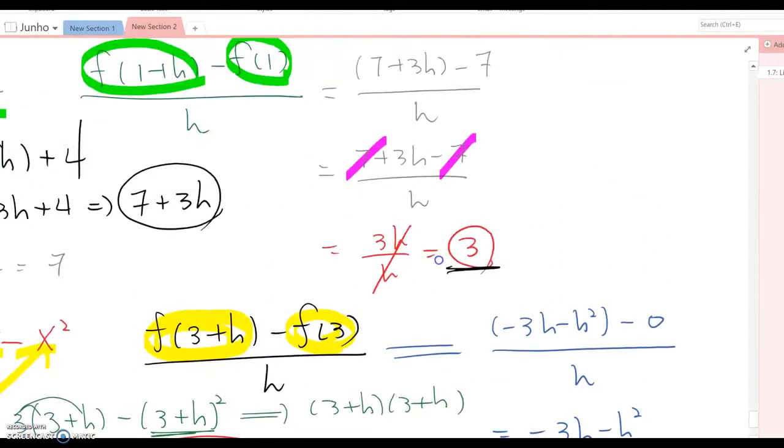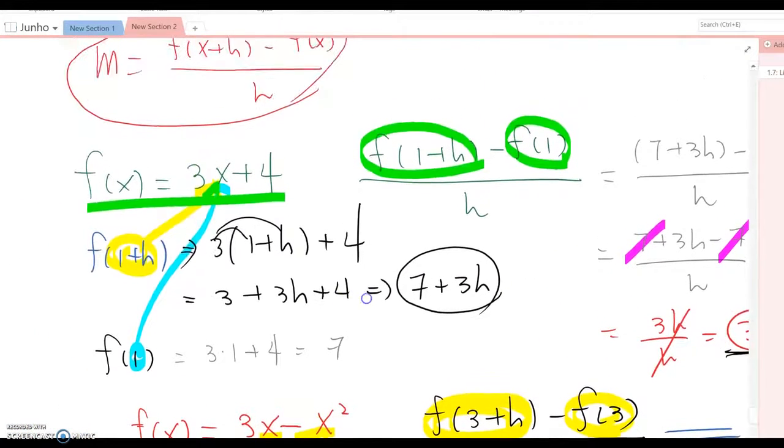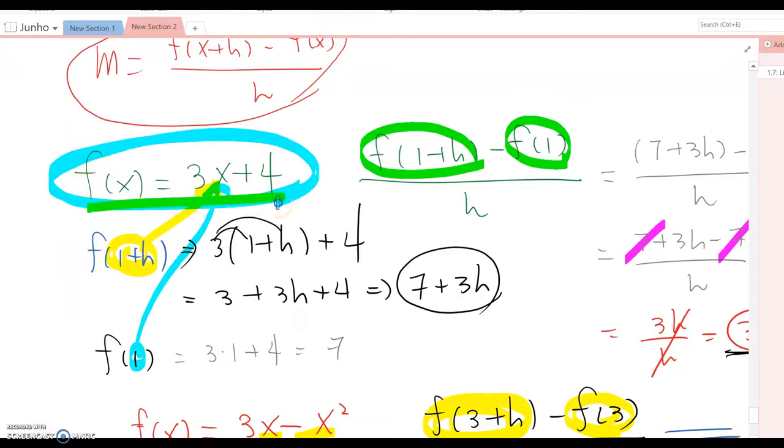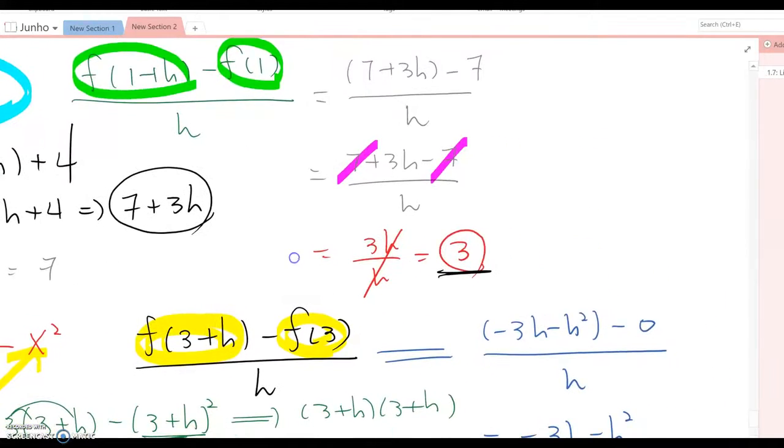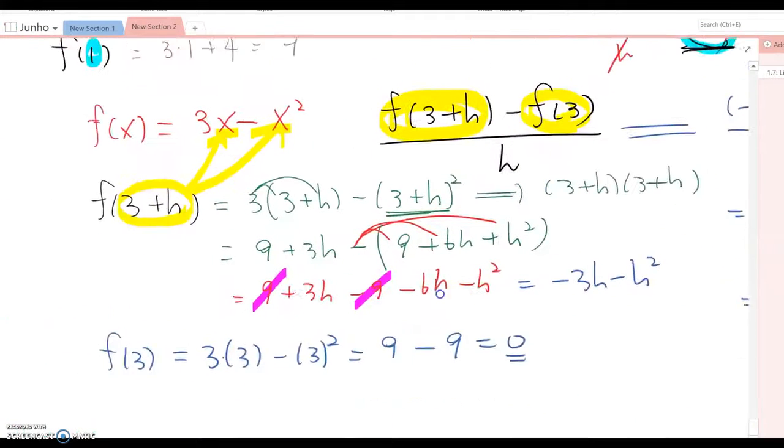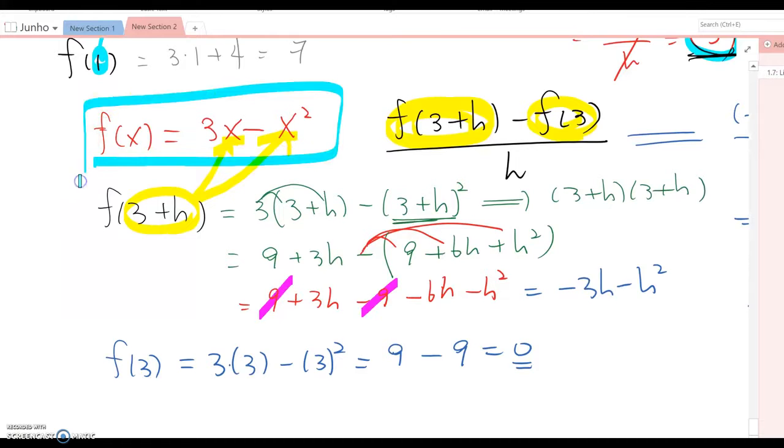Look at the given function here. Before, the given function was a linear function. Linear function means it has a regular slope, and the difference quotient means finding the slope. Therefore, whatever you do, whichever initial value or interval you choose, the slope must be the regular slope, which is 3.